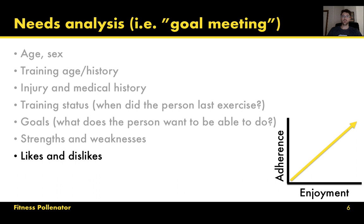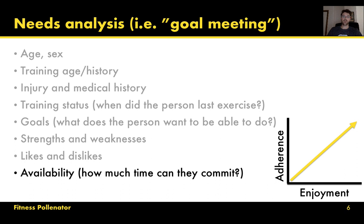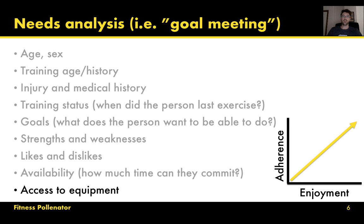We also need to know their availability — how much time can they commit to training? If they can only do two days a week but based on being advanced they should train four days, we'll write them a two-day program because that's what they can commit to. And we need to know about access to equipment — do they have a fully stocked gym with barbells and kettlebells, or are they training at home with a few dumbbells and body weight? That will impact the exercises we can prescribe.